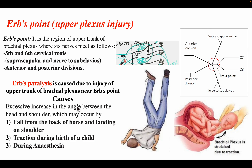The causes of Erb's paralysis include: first, an excessive increase in the angle between the head and shoulder, which may occur by falling from the back of a horse and landing on the shoulder; second, traction during birth of the child; and third, during anesthesia.